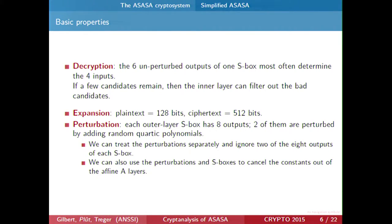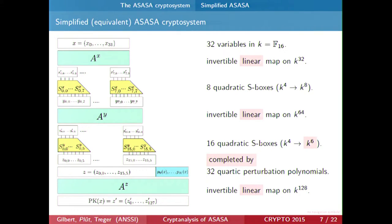The perturbation polynomials are a bit complex because they are mixed with the S-boxes. What we can do is simple: since two outputs of the S-boxes are immediately absorbed with perturbation polynomials, we can say these outputs are zero, and the perturbation polynomials take care of the absorbed outputs. So for each private key, there is an equivalent key in which two outputs of the S-boxes are zero, and we can move this part of the S-boxes to the perturbation polynomials. This means each private key is equivalent to a simpler private key where the second layer S-boxes are two-to-six. We complete by adding 32 quartic perturbation polynomials and mixing all of them together with the affine layer. We can also cancel the constants in the affine layers and assume they are linear, using the constants in the S-boxes and perturbation polynomials. This is the scheme we will attack — same scheme, but simpler presentation.